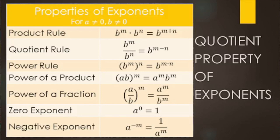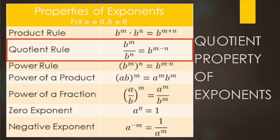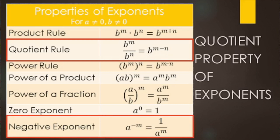In this video, we're going to be going over the quotient rule or the quotient property of exponents. That's where you have a base to an exponent over a base to an exponent — the base could be a variable or a number — and you're going to subtract those exponents with that same base. We're also going to be going over negative exponents, which will show up in this video as well.